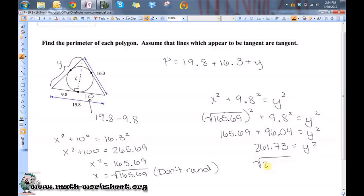So, the square root of 261.73 is equal to y squared.